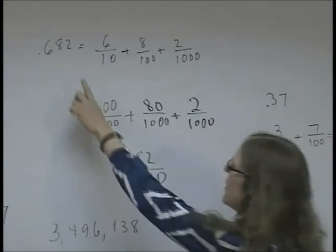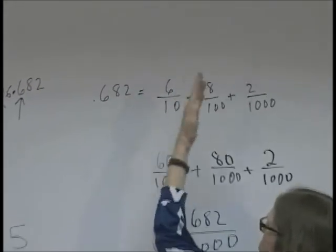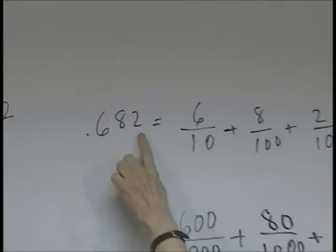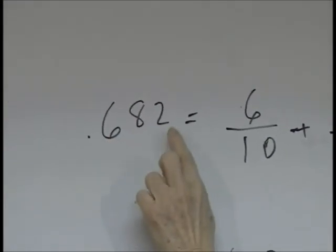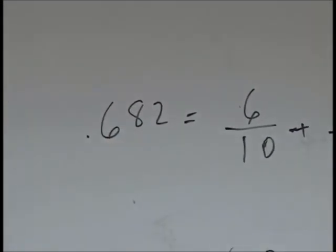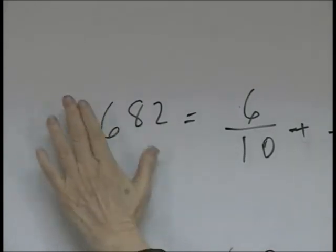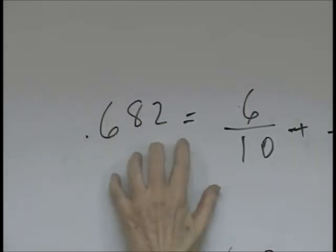So once again, the last value to the right of the decimal was the tenths, hundredths, and thousandths place. And if I read this as a fraction, I could have said 682 thousandths.